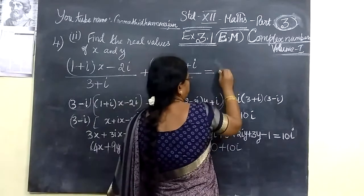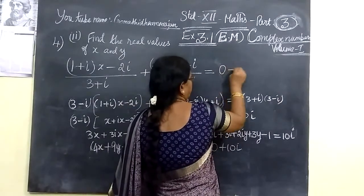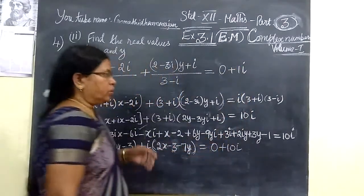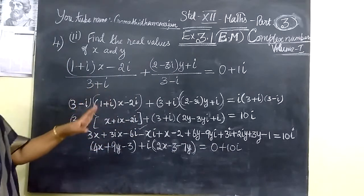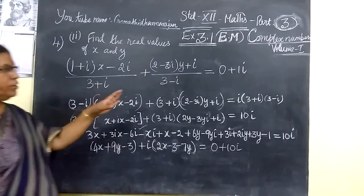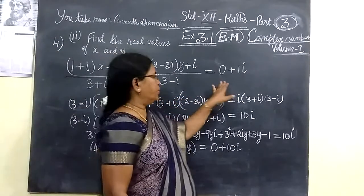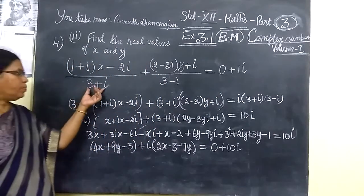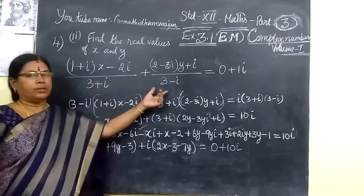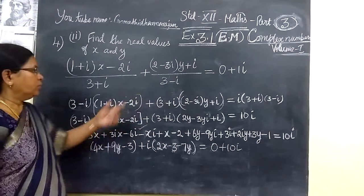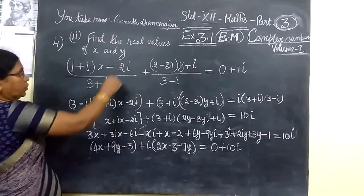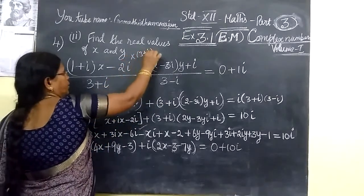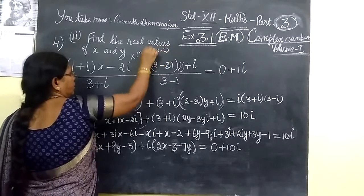The right-hand side equals i, which is a complex number. That is 0 plus 1i in complex number form — that is the standard form of complex number z. Now, taking the LCM, the LCM is (3+i)(3-i). So LCM is equal to (3+i)(3-i).